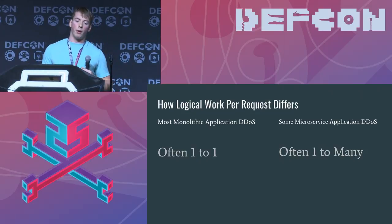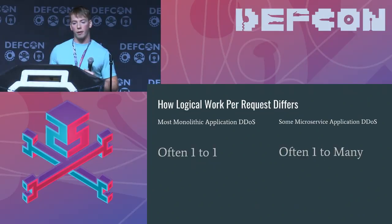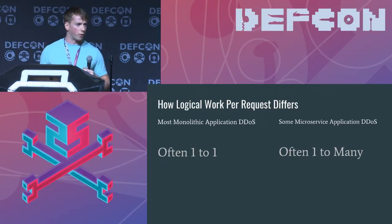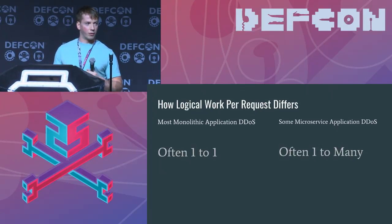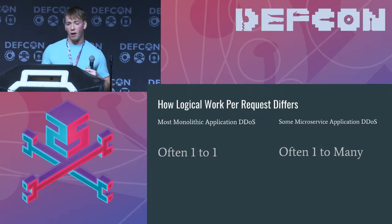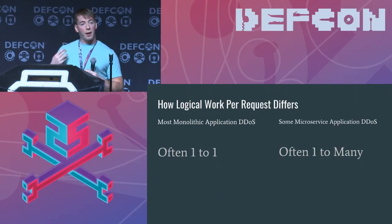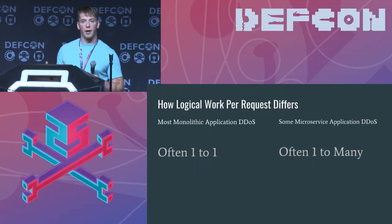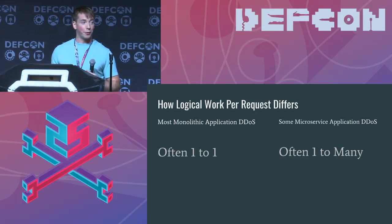There's a key difference between monolithic denial of service and microservice denial of service. Most monolithic application DDoS is one-to-one — you're sending work to the service and it's doing some calculation, so it's a one-to-one work per request ratio. Microservice application DDoS is often one-to-many, because a request to that gateway will federate out to tons of middle tier and backend services. If we construct those requests correctly, we might be able to cause a lot of work, and each microservice has different characteristics — different health checks, timeouts, system builds, and configurations. There's a lot we might be able to cause havoc on if the system can't handle those requests.